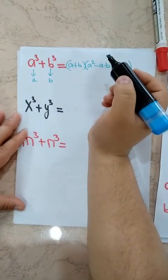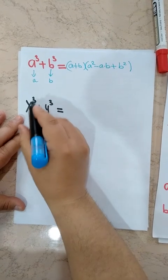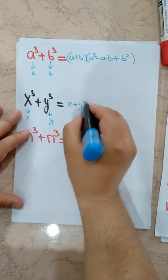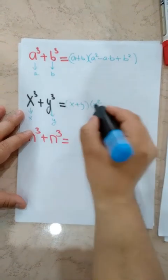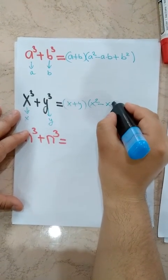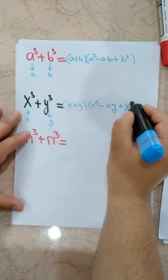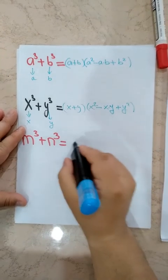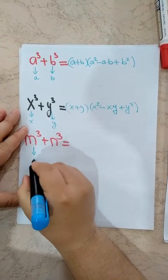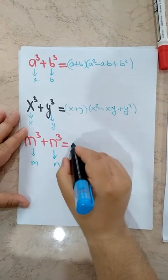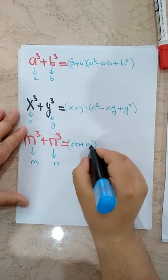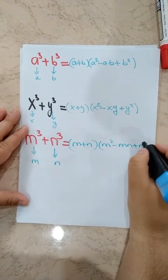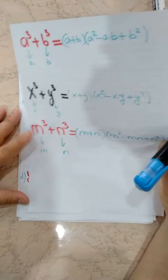This is the expanded form. Using the same logic: X cubed plus Y cubed — first term is X, second term is Y — gives X plus Y times X squared minus XY plus Y squared. And M cubed plus N cubed — first term M, second term N — gives M plus N times M squared minus MN plus N squared.